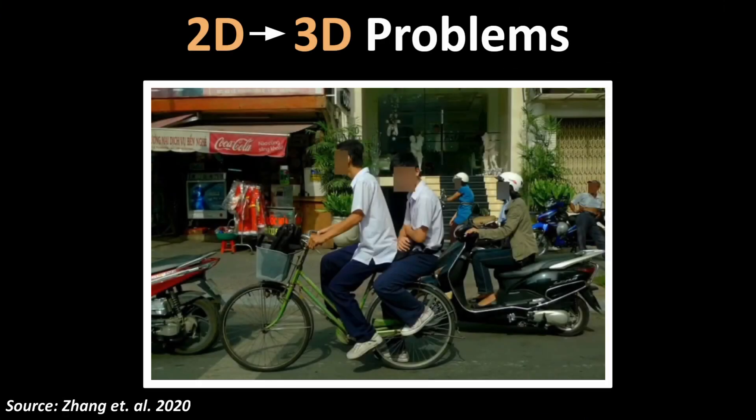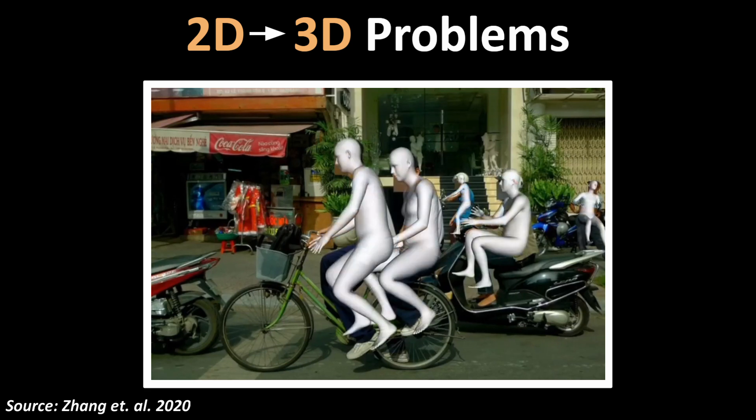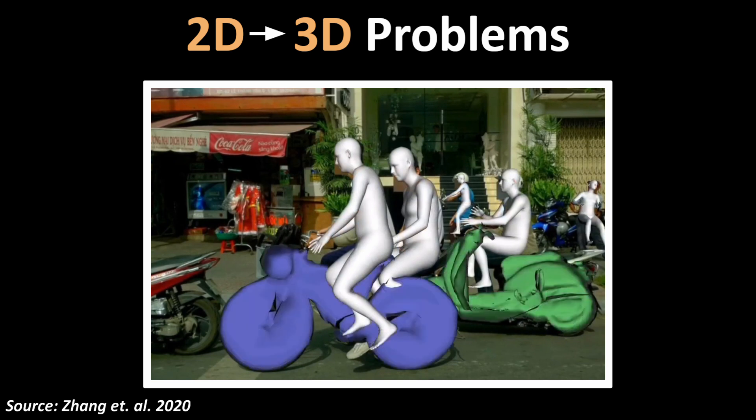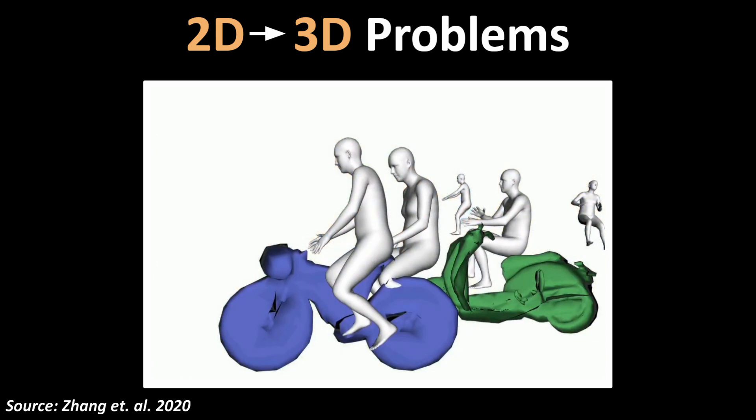Now you might think that sounds like an easy task - just run both models sequentially. First run the human detection model, then run the object detection model, and combine their outputs into the same 3D scene.